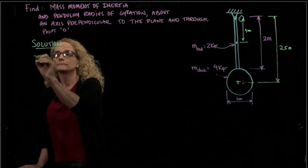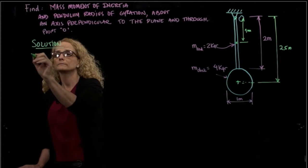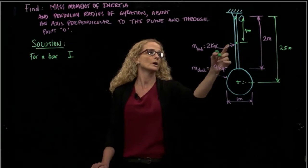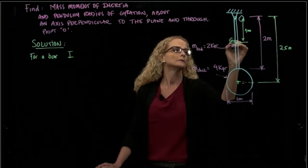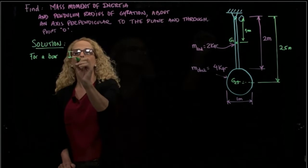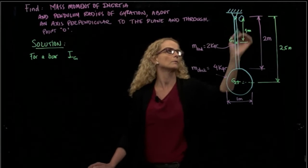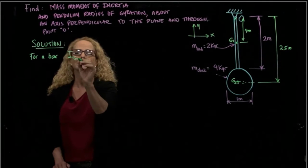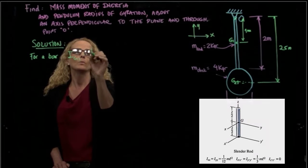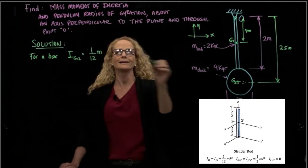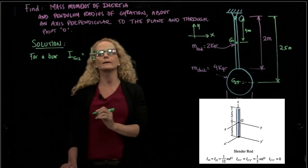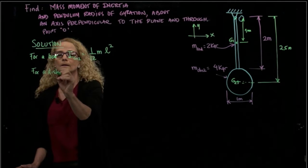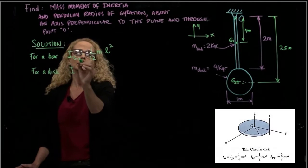And for a rod, or a bar, the mass moment of inertia about the, let's call this G1 and G2, about, so let's draw our coordinate system right here, X and Y, and you know this is about Z, and it will be 1/12 mass the length squared. And for a disc,